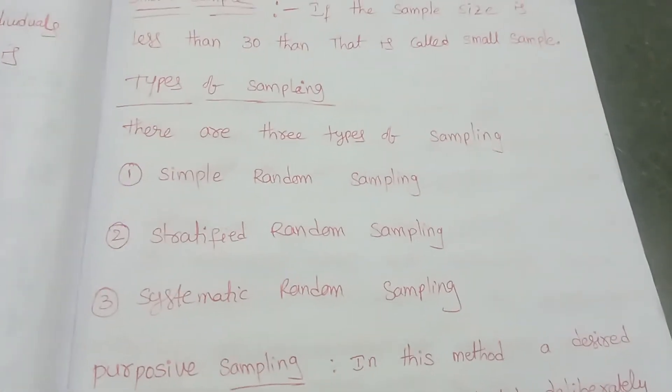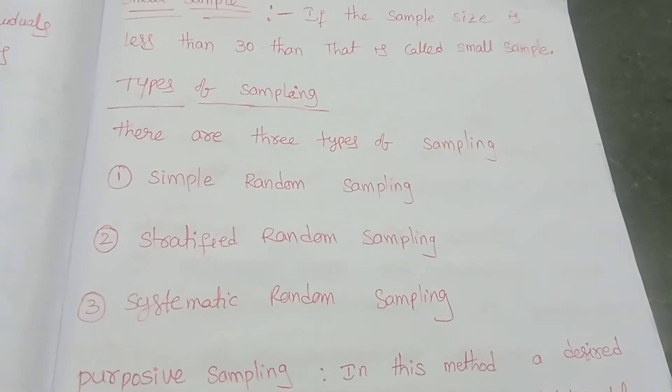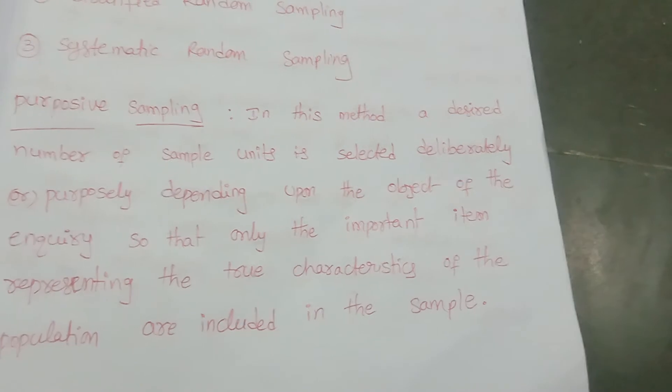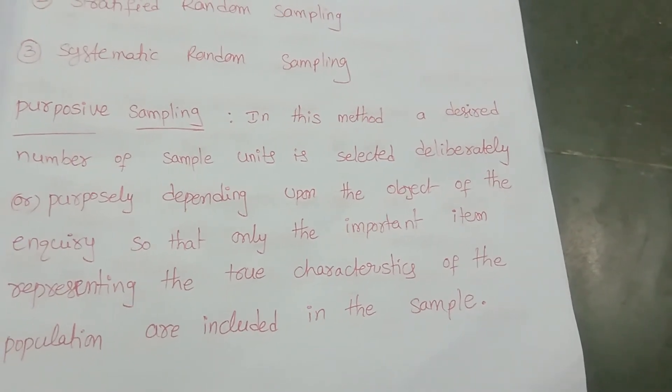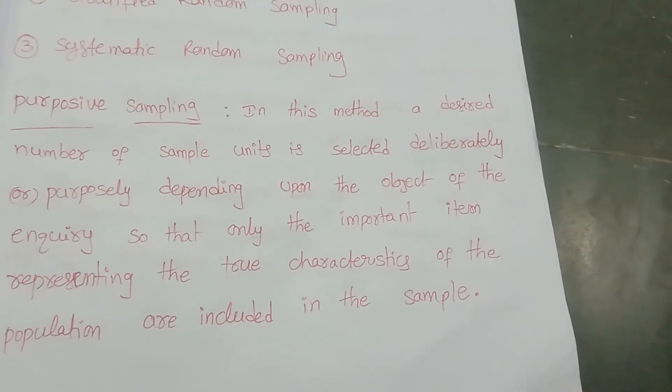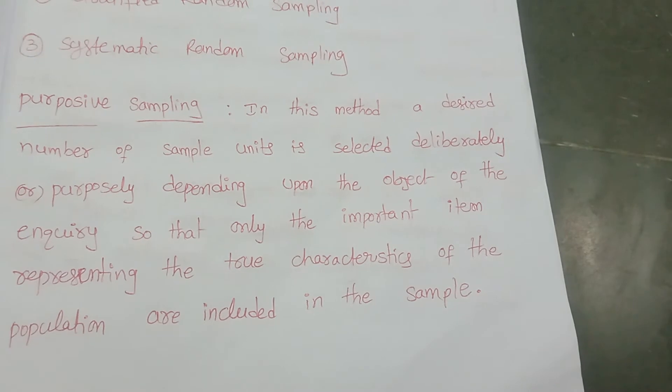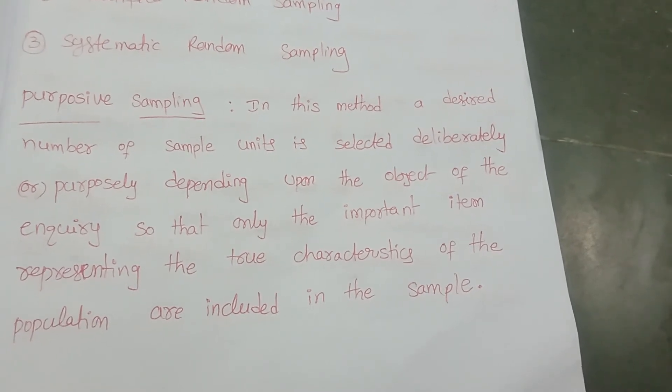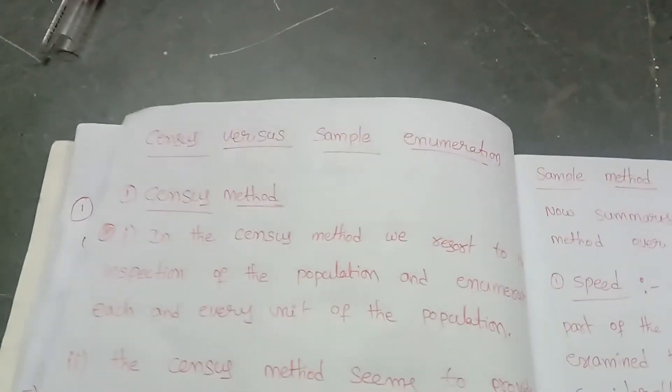These are the three main types of sampling: simple random sampling, stratified random sampling, and systematic random sampling. One more definition in our syllabus is purposive sampling. In this method, a desired number of sample units is selected purposively depending upon the objective of the inquiry, so that only important items corresponding to the true characteristics of the population are included in the sample.